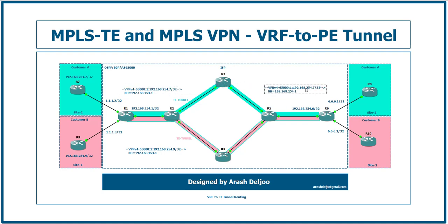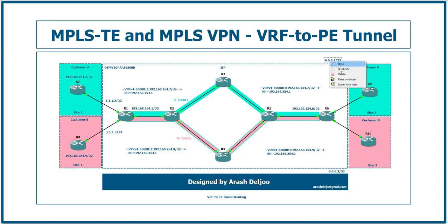Because both updates share the same next-hop, when Router 6 receives them it must use the same next-hop for addresses in both VRFs. In VRF A2, 192.168.254.7 is imported and traffic to that address is forwarded to 192.168.254.1. Similarly, 192.168.254.9 is imported into VRF B2, and traffic received from Router 10 to that address also has a next-hop of 192.168.254.1.